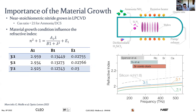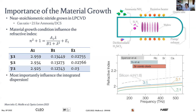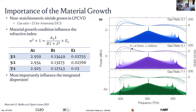What we have seen is that if you vary the gas ratio from 3:1 to 7:1, the Sellmeier formula coefficients that give you the refractive index of the material change quite a lot. From 3:1 to 7:1, the refractive index of the material is reduced. But the most important thing is not just whether it changes the refractive index — it actually changes the integrated dispersion, which is what defines the shape of your comb.